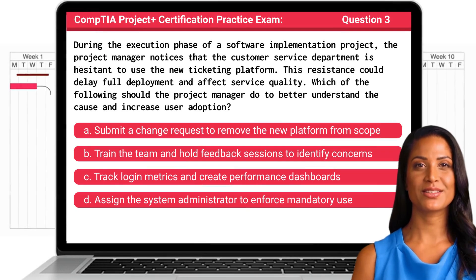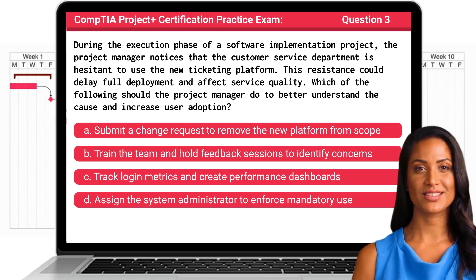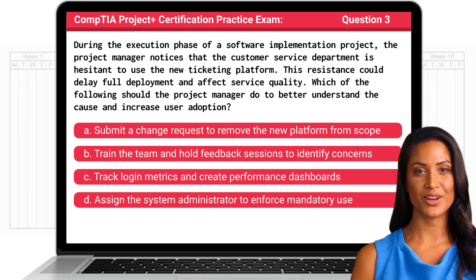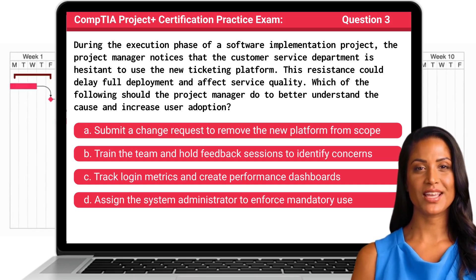Question 3. During the execution phase of a software implementation project, the project manager notices that the customer service department is hesitant to use the new ticketing platform. This resistance could delay full deployment and affect service quality. Which of the following should the project manager do to better understand the cause and increase user adoption?